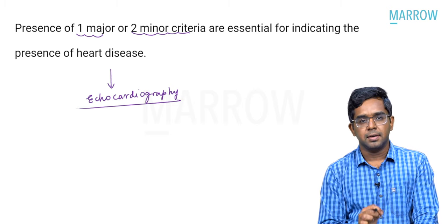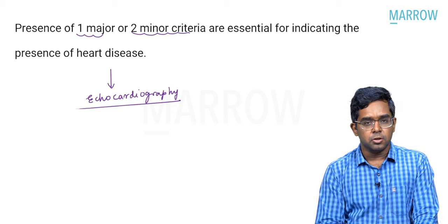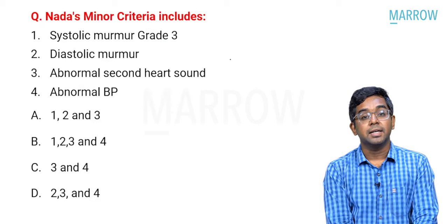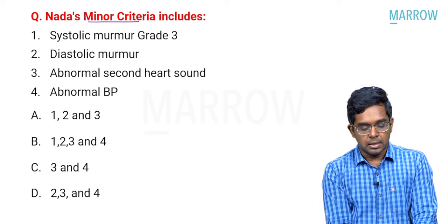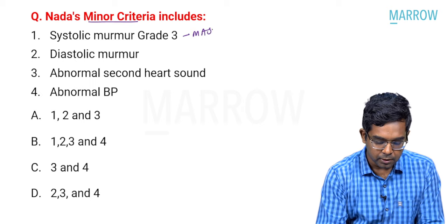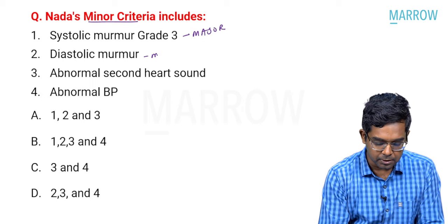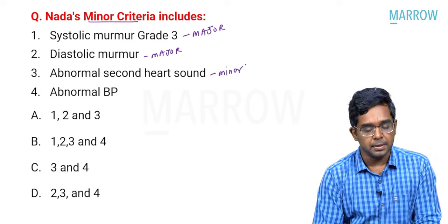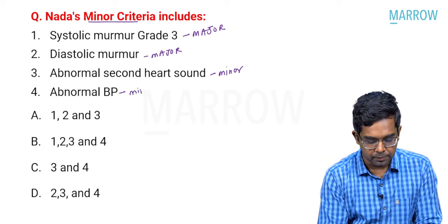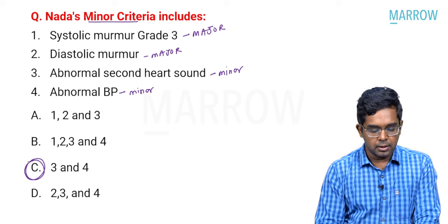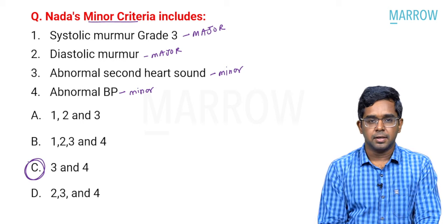That is about NADA's criteria in brief. Now, going back to the question about minor criteria: systolic murmur grade 3 is a major criterion; diastolic murmur again is a major criterion; abnormal second heart sound is a minor criterion; abnormal BP is also a minor criterion. So the answer for this question will be option C, which includes options 3 and 4 — the NADA's minor criteria.